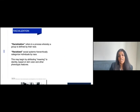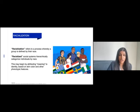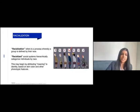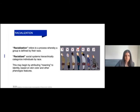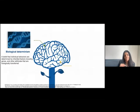How does a construct like race get applied to societies? Racialization refers to a process where a group is defined by their race. Racialized social systems hierarchically categorize individuals by race. In the United States, the race placed in the superior position often receives greater economic remuneration, better jobs, and more socio-political advantages.